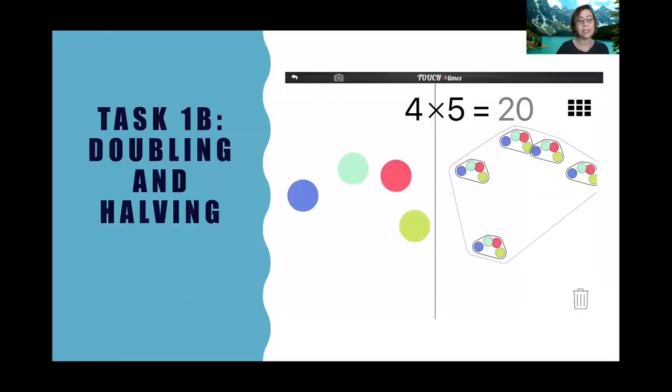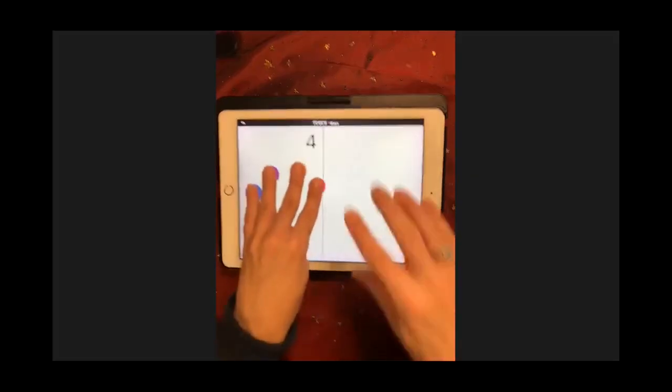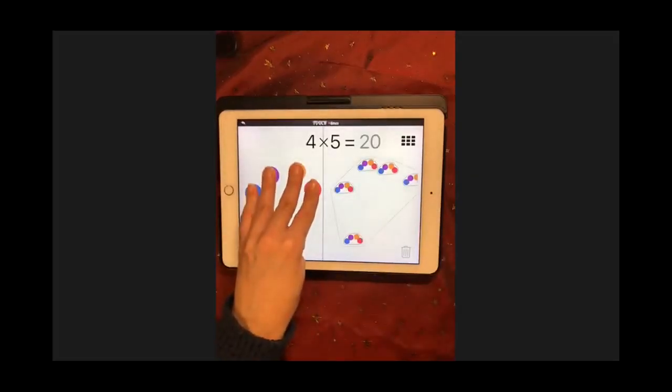Let's look at a second task. This time, let's have a look at a halving task. Right now, the product is 20. How can you halve the product so that it becomes 10? Your challenge is to halve the product by only changing the pips. Once you've done that, halve the product again to make 5.